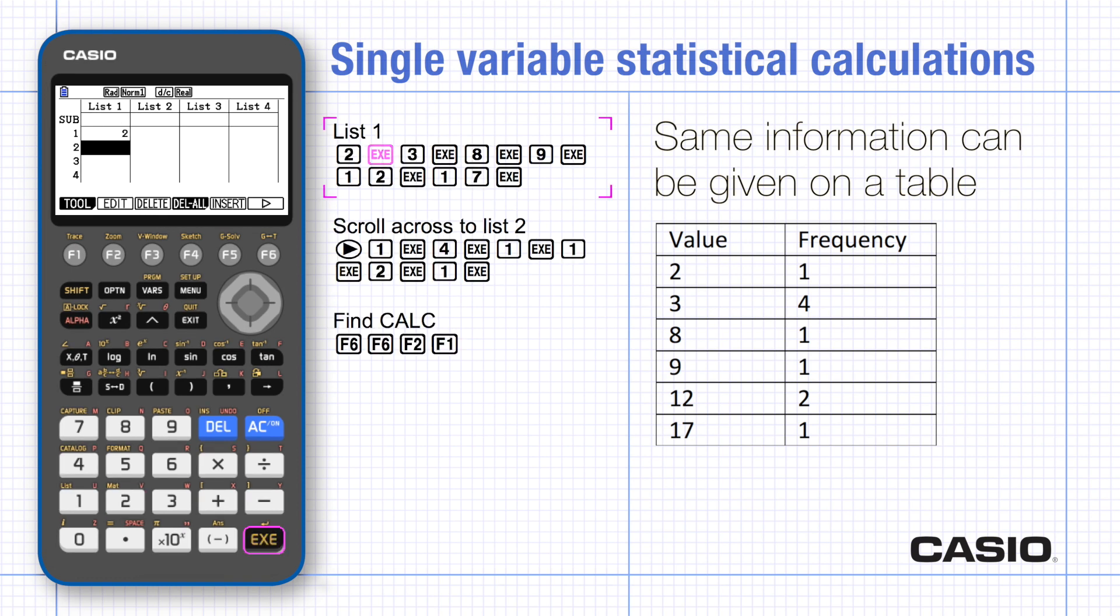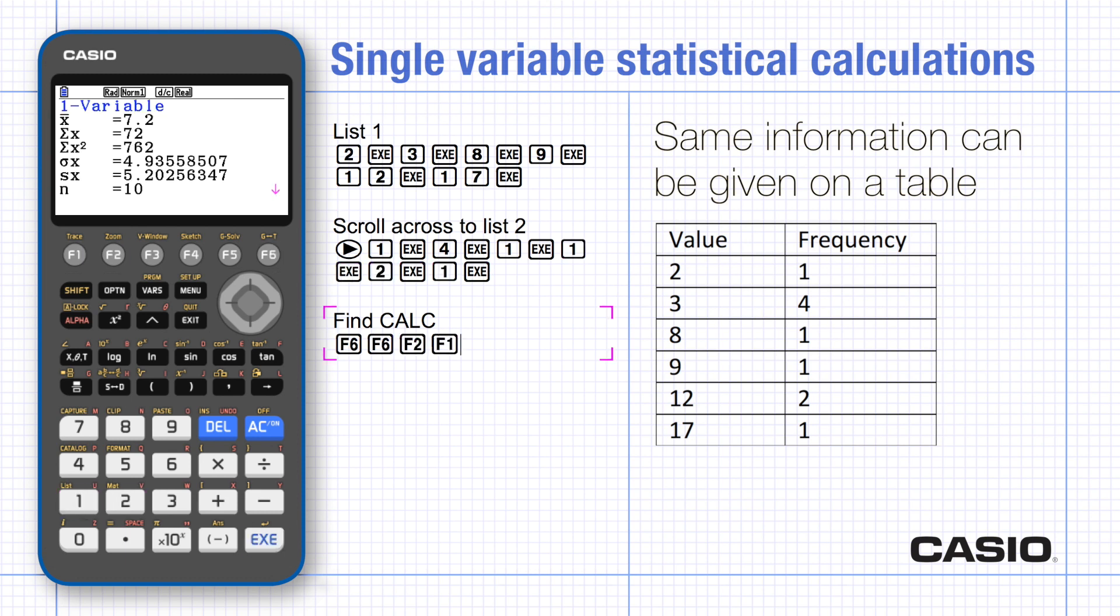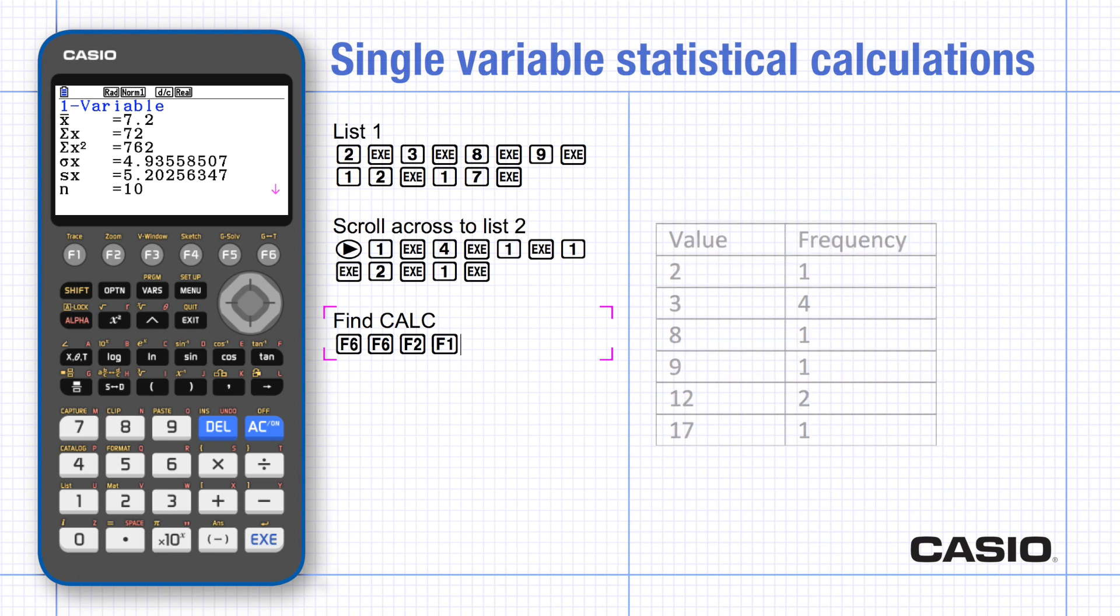Type the list of values from the table into list one, and then scroll across to list two and type the frequencies. Scroll through the menu to find calc, and the same values as before are displayed.